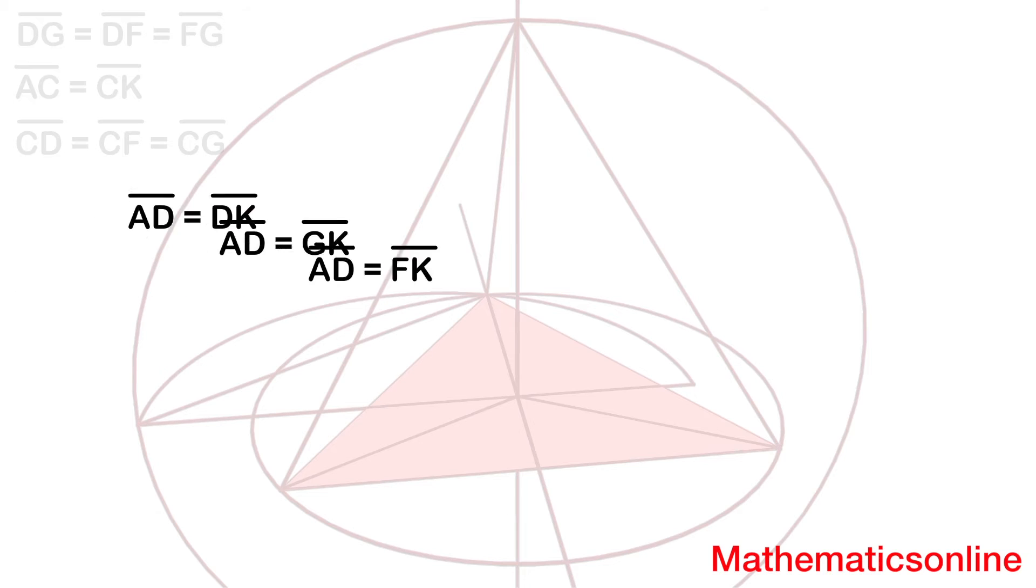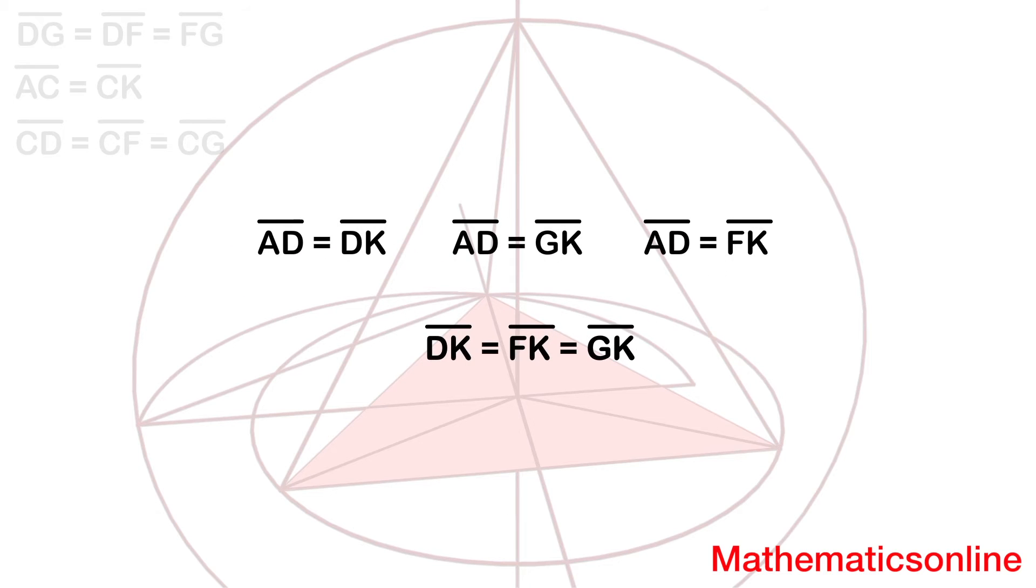So what we have so far is DK, FK, GK, and AD are all equal. These sides represent the top of the tetrahedron.